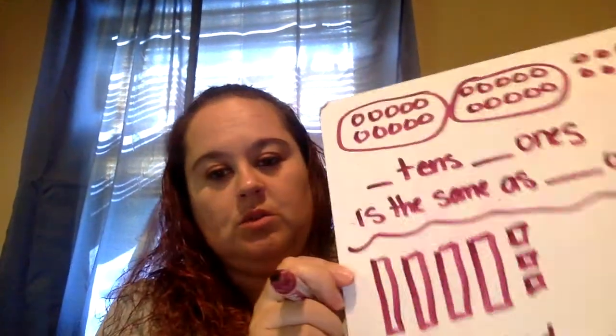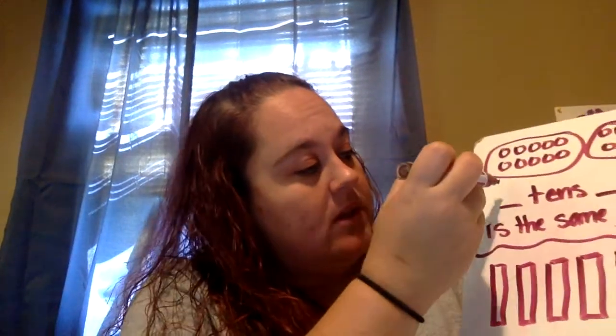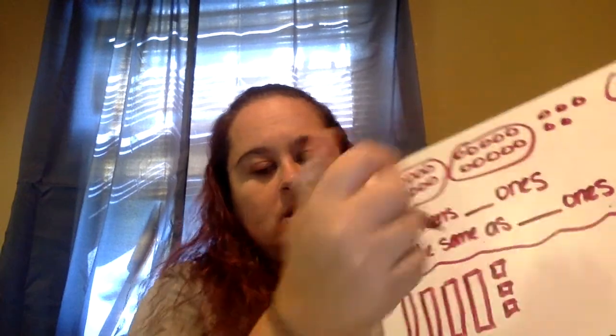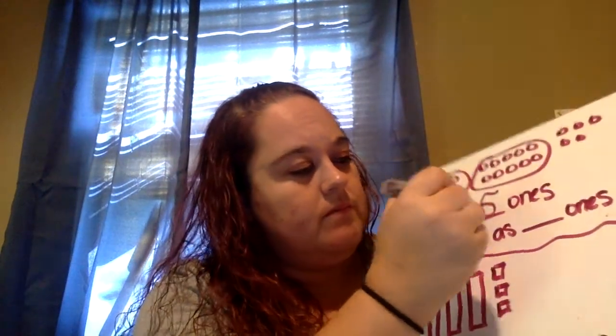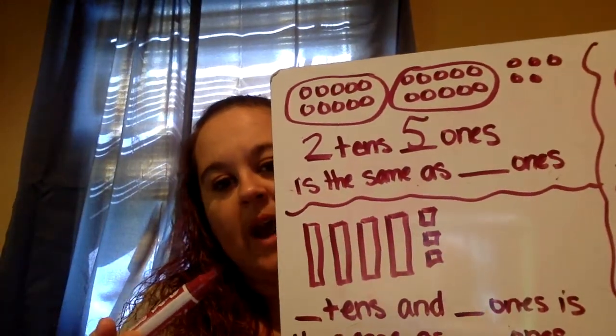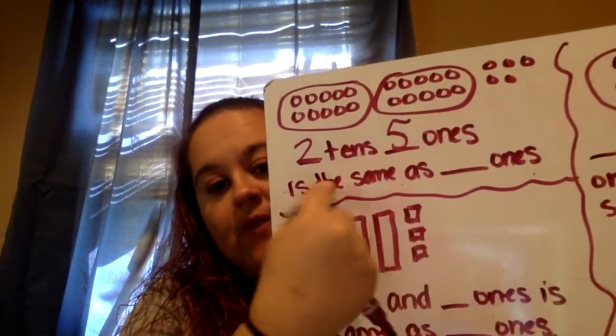And that is two tens. So two tens. And then I have five more ones. Five more ones. So two tens and five ones is the same as twenty-five ones.